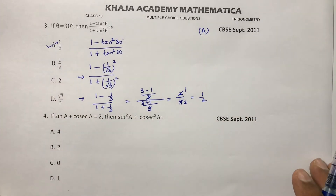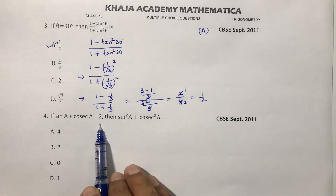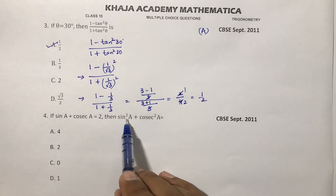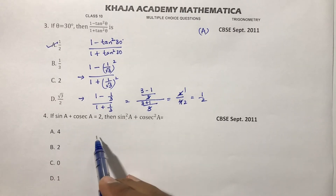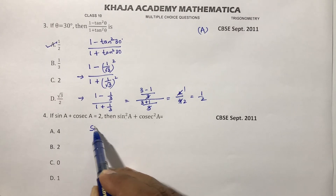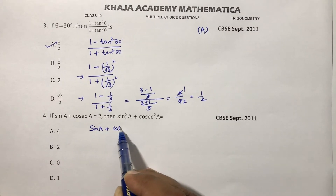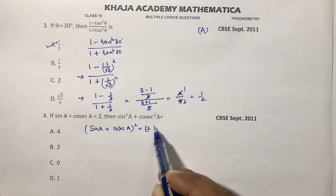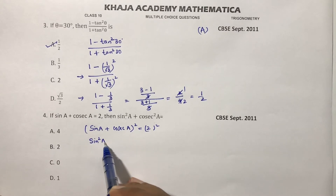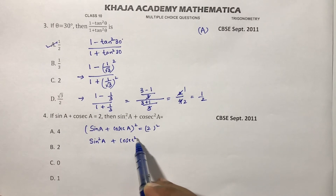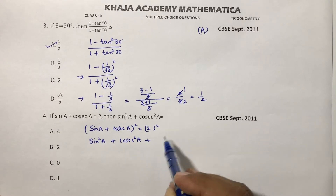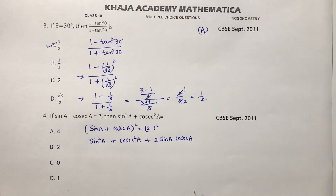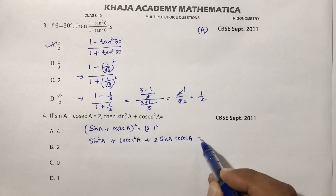If sin A plus cosec A equals 2, then find sin squared A plus cosec squared A. Square both sides: sin squared A plus cosec squared A plus 2 sin A into cosec A equals 4.